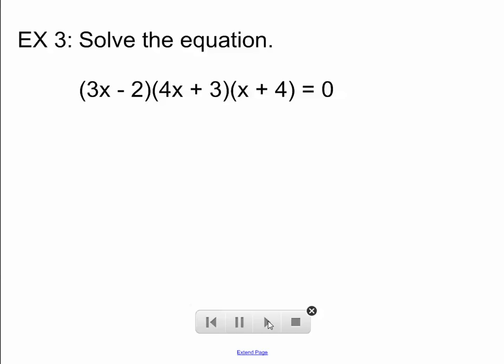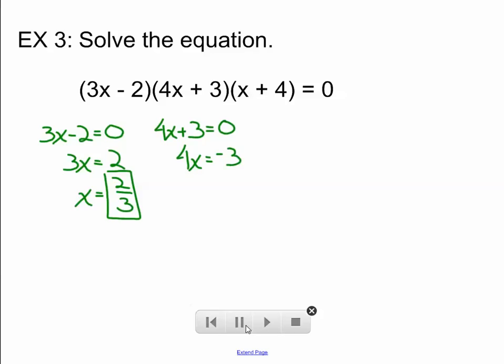Well, this equation looks pretty difficult, but we can use the same idea. 3x minus 2 could be zero. So, I'll add 2 to both sides and divide both sides by 3. Or, 4x plus 3 could be zero. So, I'll subtract 3 from both sides and then divide both sides by 4. Or, x plus 4 could be zero. So, I could subtract 4 from both sides to get that answer. This isn't even a quadratic equation, but it is in factored form. And, those are the three solutions to the equation. 2 thirds, negative 3 fourths, and negative 4.